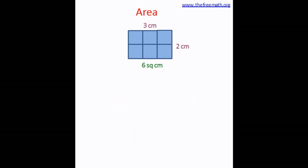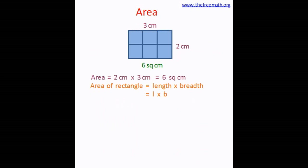Here is a rectangle with 6 squares, so the area is 6 square centimeters. The length is 3 centimeters and the breadth is 2 centimeters — since every small square has a side of 1 centimeter, the area is 2 multiplied by 3 equals 6 square centimeters. So the area of a rectangle can be calculated as length multiplied by breadth, or L × B.